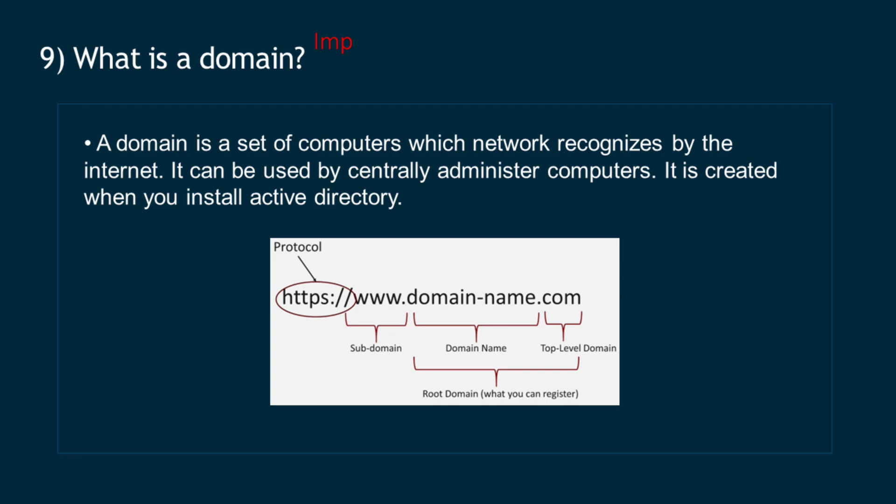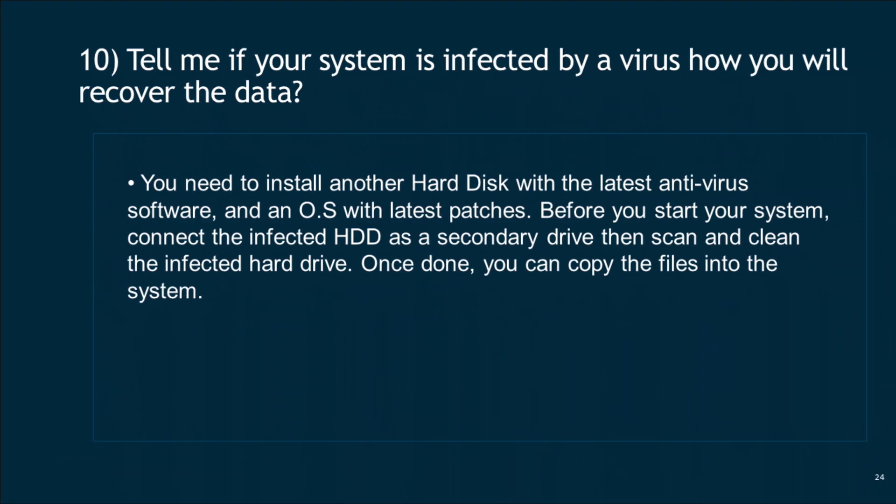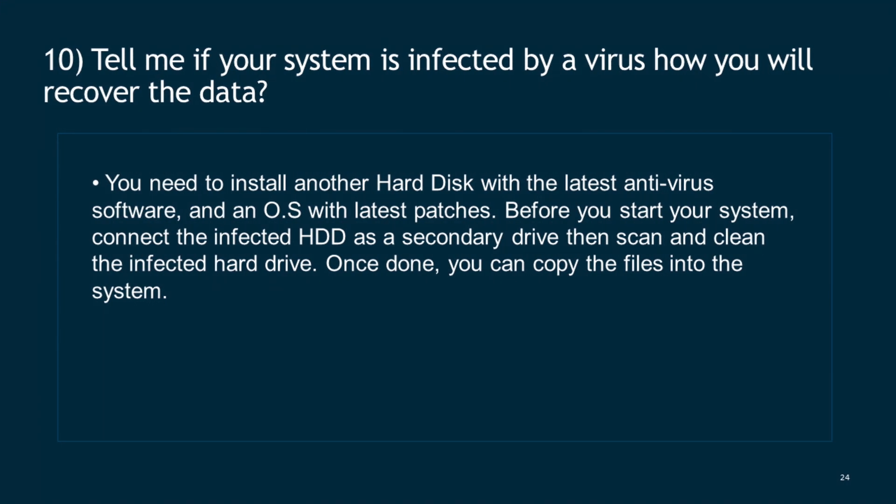Question 9: What is a domain? A domain is a set of computers which a network recognizes by the internet. It can be used by centrally administered computers and is created when you install Active Directory. Question 10: If your system is infected by a virus, how will you recover the data? Install another hard disk with the latest antivirus software and an OS with latest patches. Before starting your system, connect the infected HDD as a secondary drive, then scan and clean the infected hard drive. Once done, you can copy the files into the system.